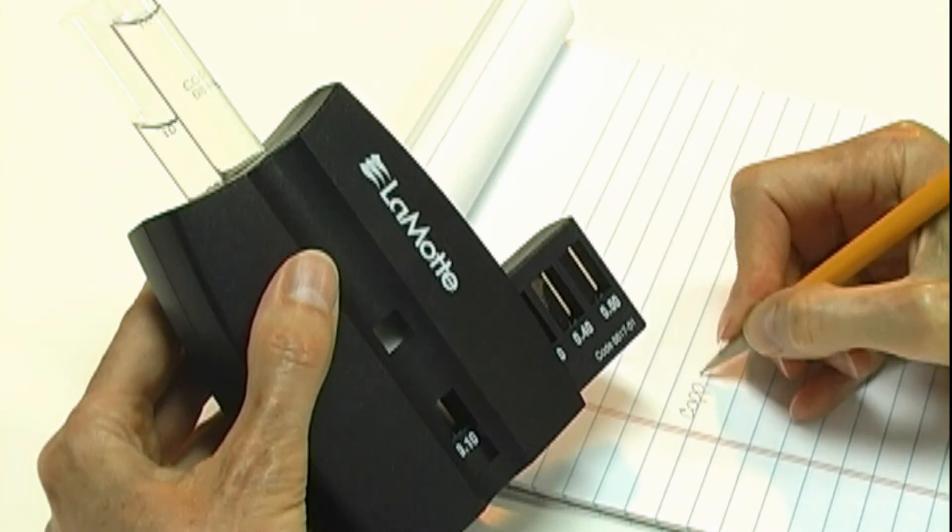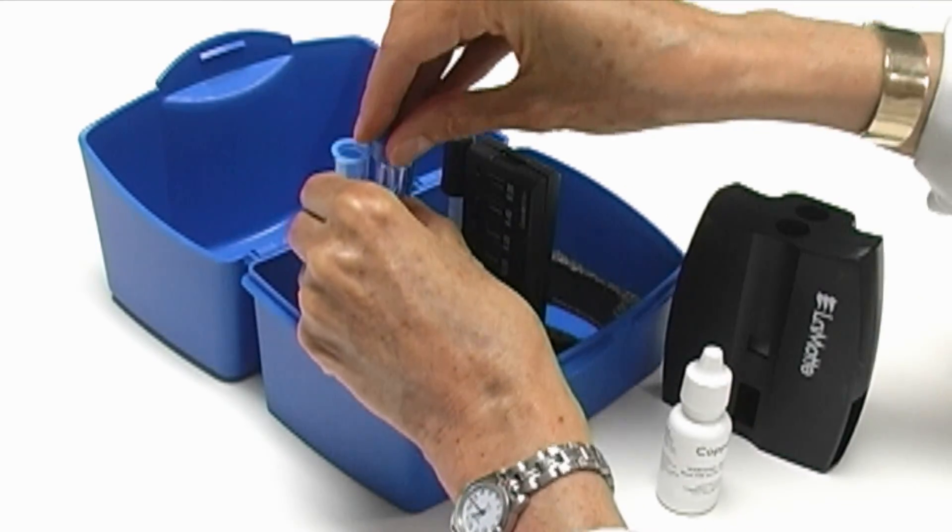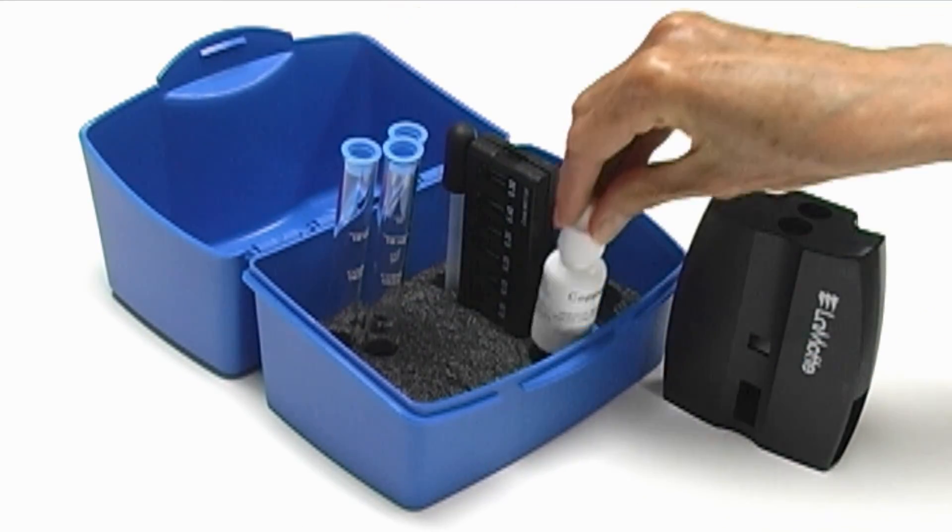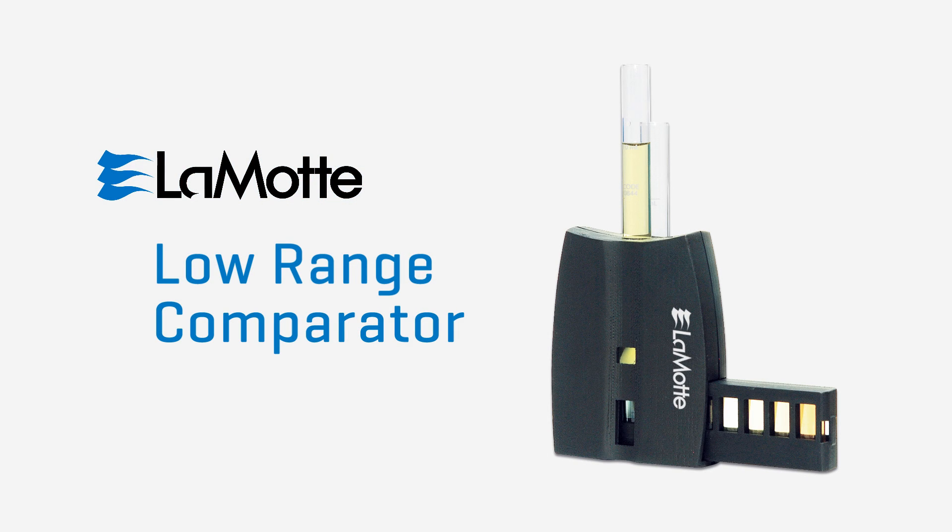Record the test result. Clean and dry the glassware and replace the items in the kit. Thanks for choosing a Lamont Company low range comparator kit.